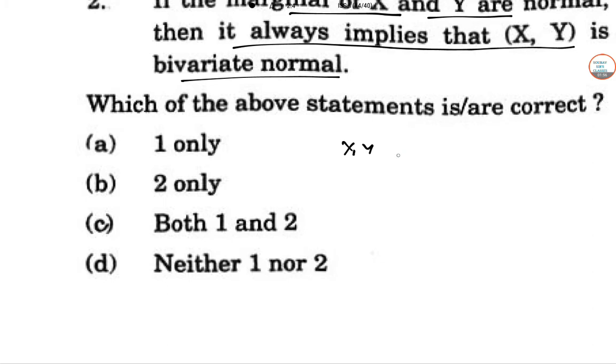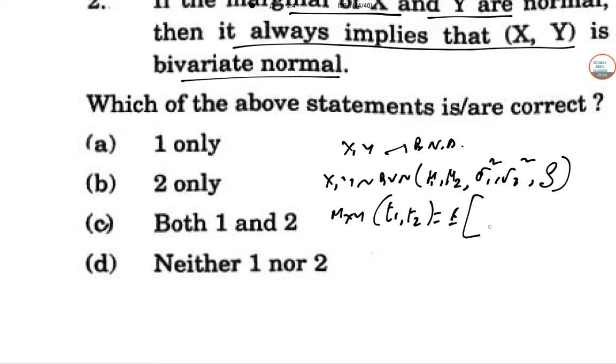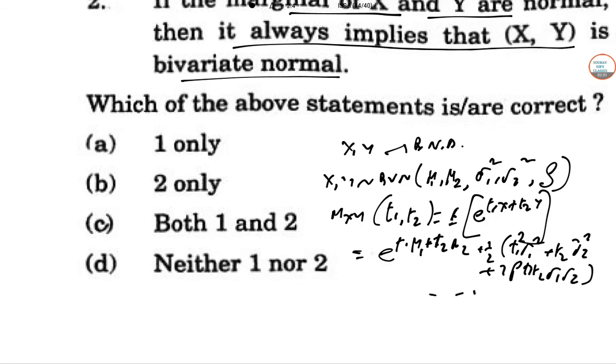X, Y possesses a bivariate normal distribution if and only if X and Y are normal variate. So verifying, X and Y are bivariate normal distribution maybe mu 1 and this is mu 2, this is sigma 1 square, sigma 2 square and this is sigma. So M of X, Y, T1, T2, this is expectation E of E to the power T1X plus T2Y. So this thing will be E to the power T1 mu 1, T2 mu 2, half of T1 sigma 1 square, T2 sigma 2 square plus 2 rho T1, T2 sigma 1, sigma 2. So this is the first part.